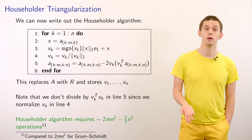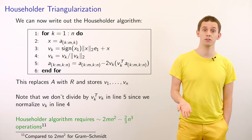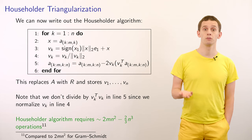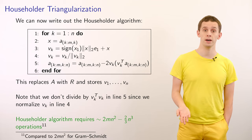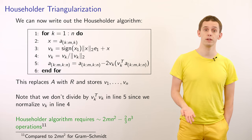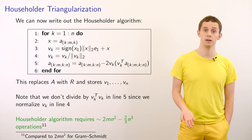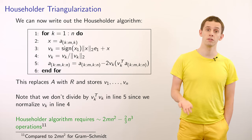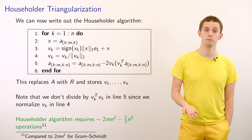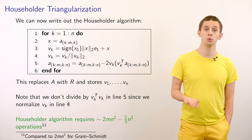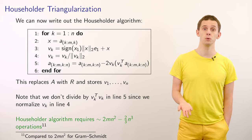We can now write out the Householder algorithm. We loop over columns K from 1 to N. First we compute vector x, which is the K-th column of matrix A from the diagonal and below. We use x to compute vector V as described, then normalize V. We then use V to apply our Householder reflector to matrix A. Note that in this step we don't divide by V^T V because we've already normalized the vector. After running this algorithm, it replaces matrix A with the upper triangular form R, and we store all vectors V_1 through V_n.